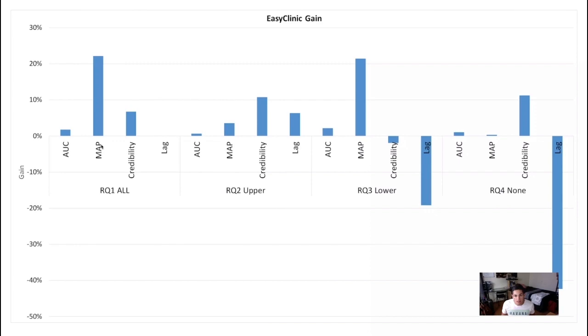What we find is that we actually improve the previous technique, specifically the mean average position in every case here. Even when there are no traces provided. If we remember there are traces from the requirements to designs and then designs to classes. There are cases where you don't have any of those traces, so you are left for the technique to provide for itself. Even in that case, the average position is improved and that's really good news.